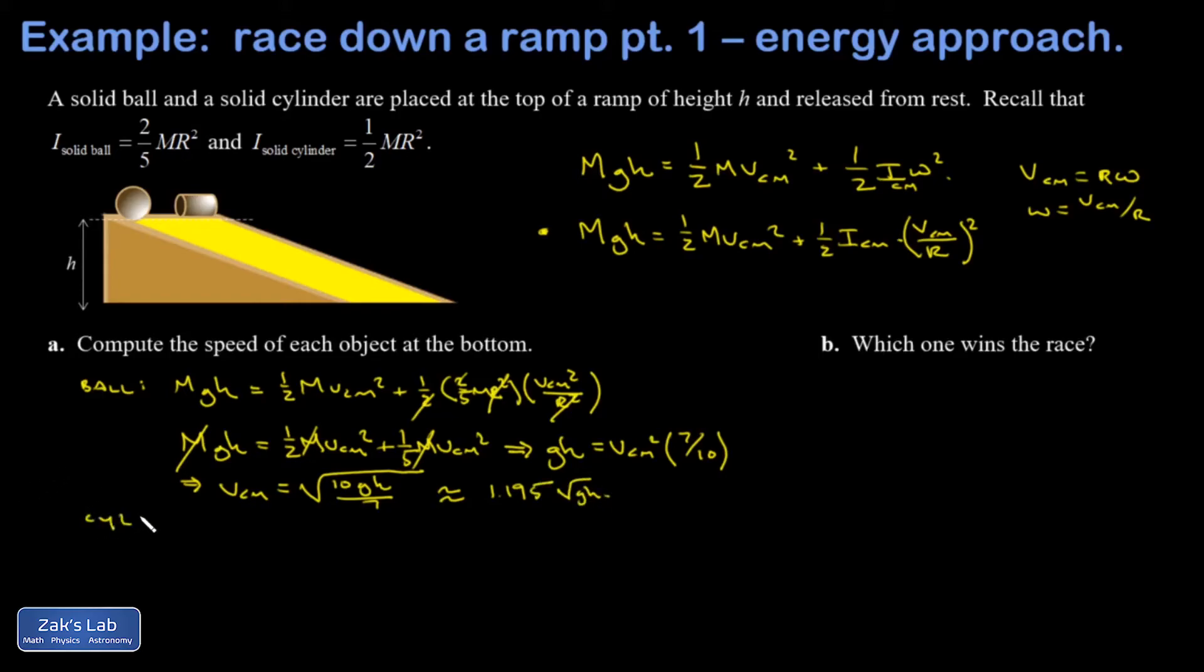Let's do the cylinder. Same basic idea. I have gravitational potential converted into two types of kinetic, part translational, part rotational, and my moment of inertia is one half MR squared. The radius cancels out. Once again, the M's cancel out of all the terms and I end up with GH equals V center of mass squared times one half plus one fourth this time.